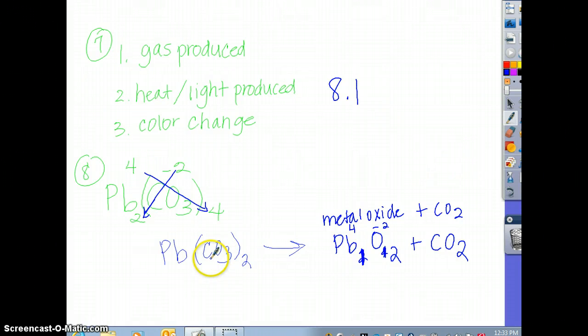And is this balanced? I see no because there's a 2 carbon. I have 1 carbon. So let's put a 2 here. 1 lead, 1 lead. The carbons are good. Our oxygen is good. Let's see. 2 times 3 is 6. 2, 4, 6. Yep. This one's good now.